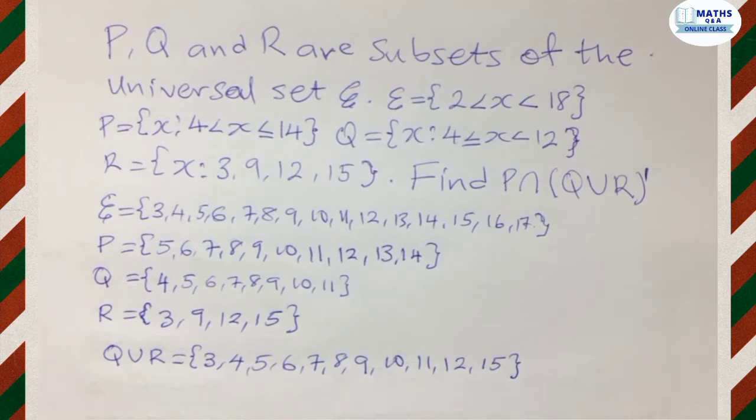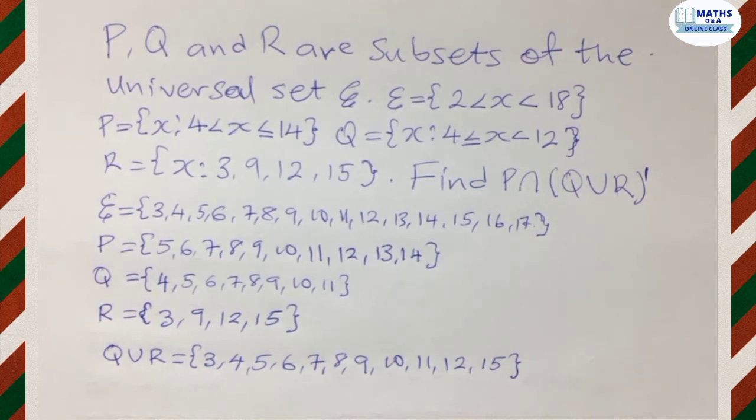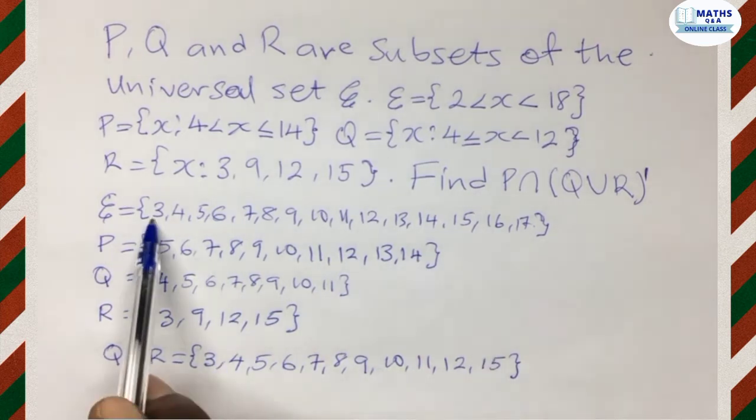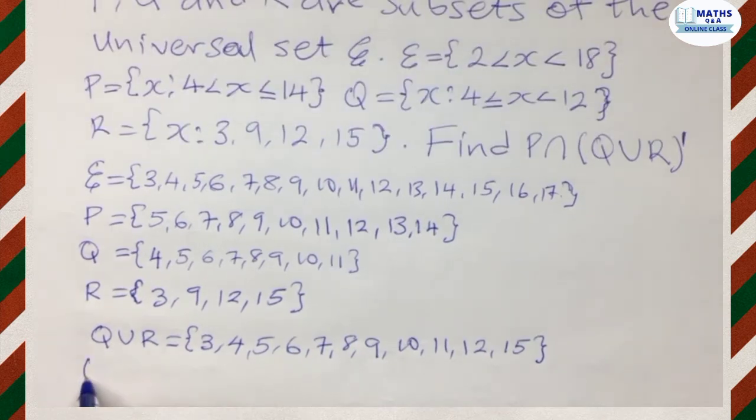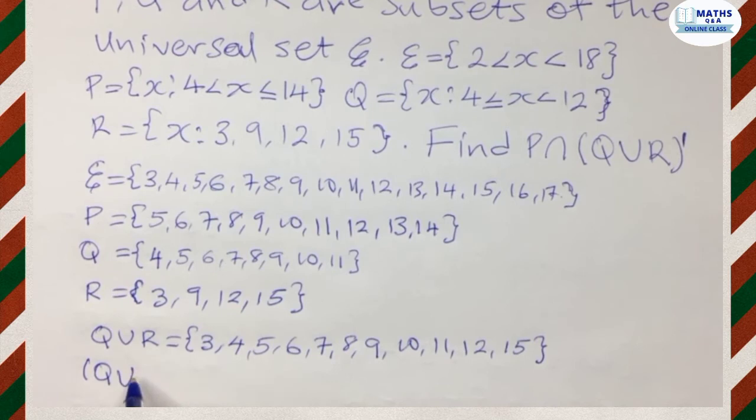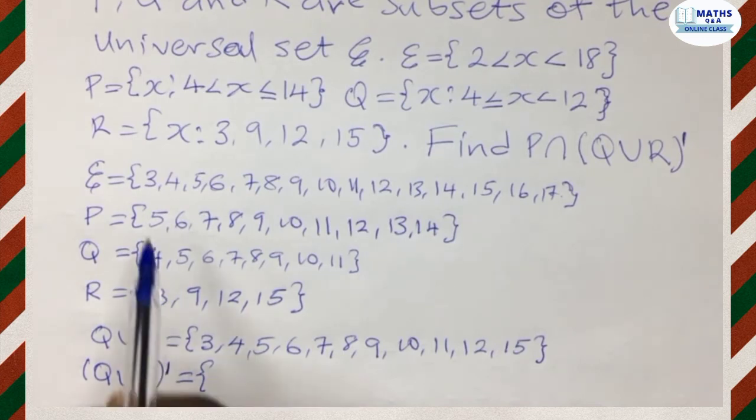Then we find its complement. The complement means we're comparing the sets in here, which is Q union R with the universal set. And any elements in the universal set, which is not found in the union of Q and R will form its complement. So Q union R complement or prime.